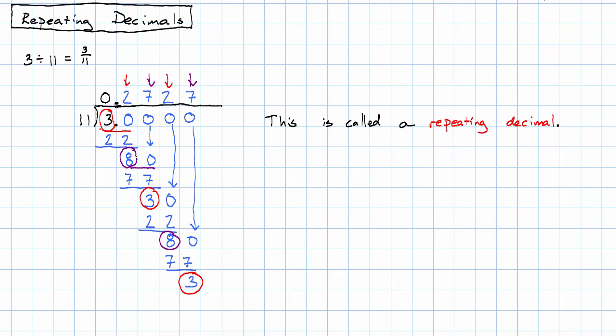This is called a repeating decimal. This pattern 272727 will continue forever. To indicate that we have a pattern like this, we write one repetition of the pattern with a bar over it. So that 27 with a bar over it says that the pattern 272727 will continue forever.